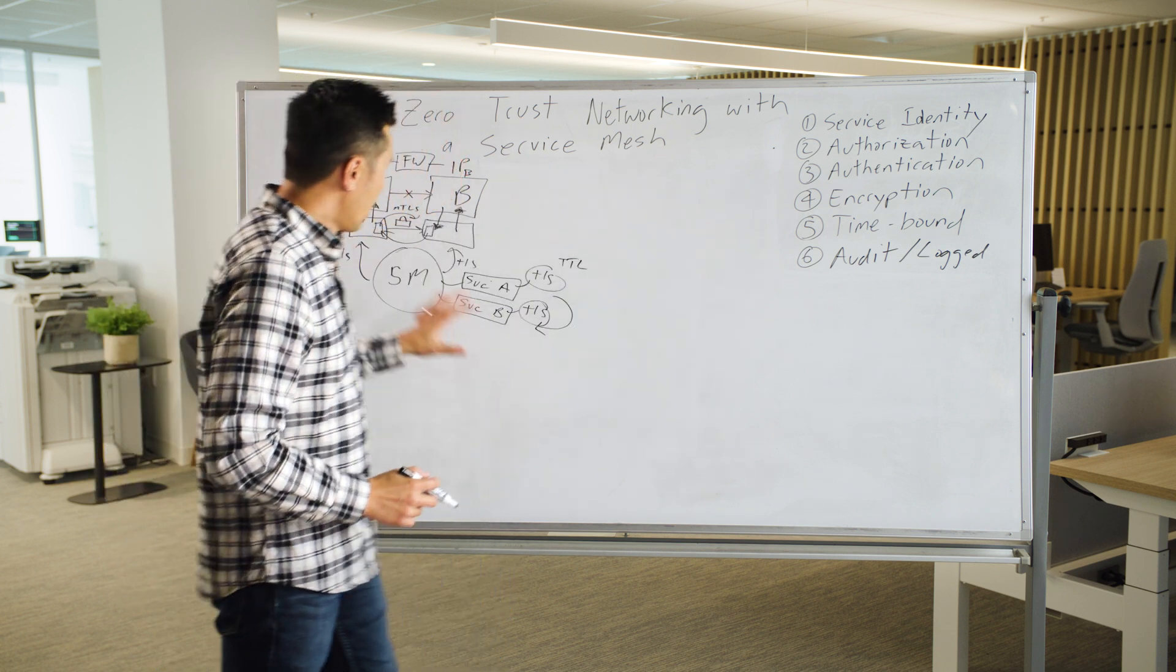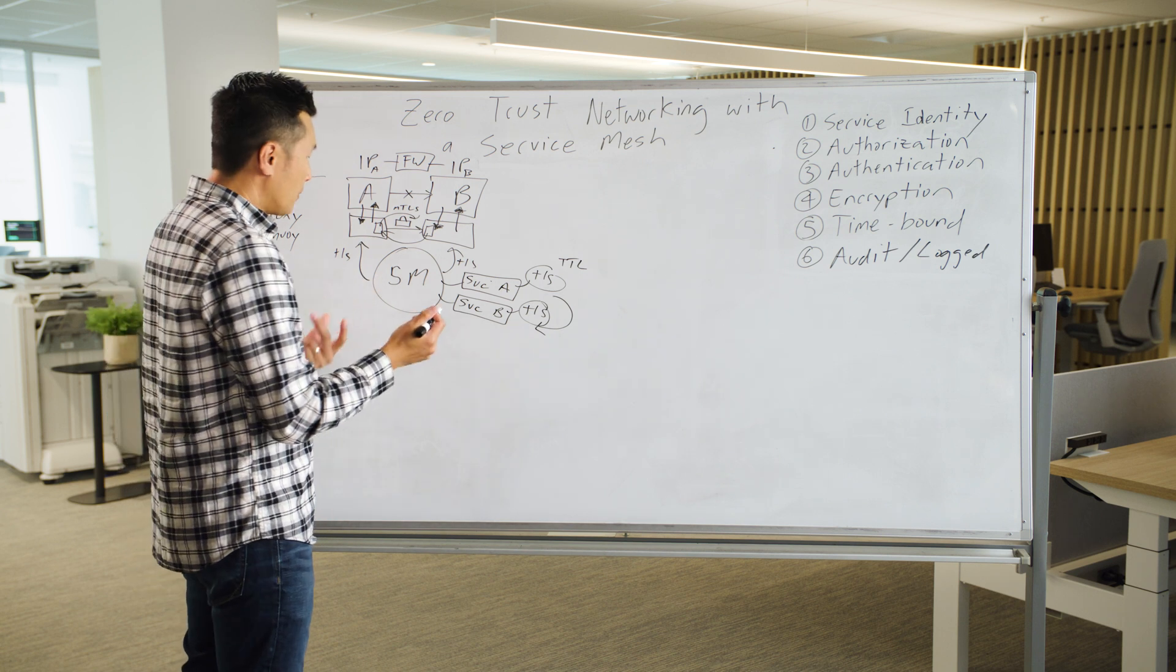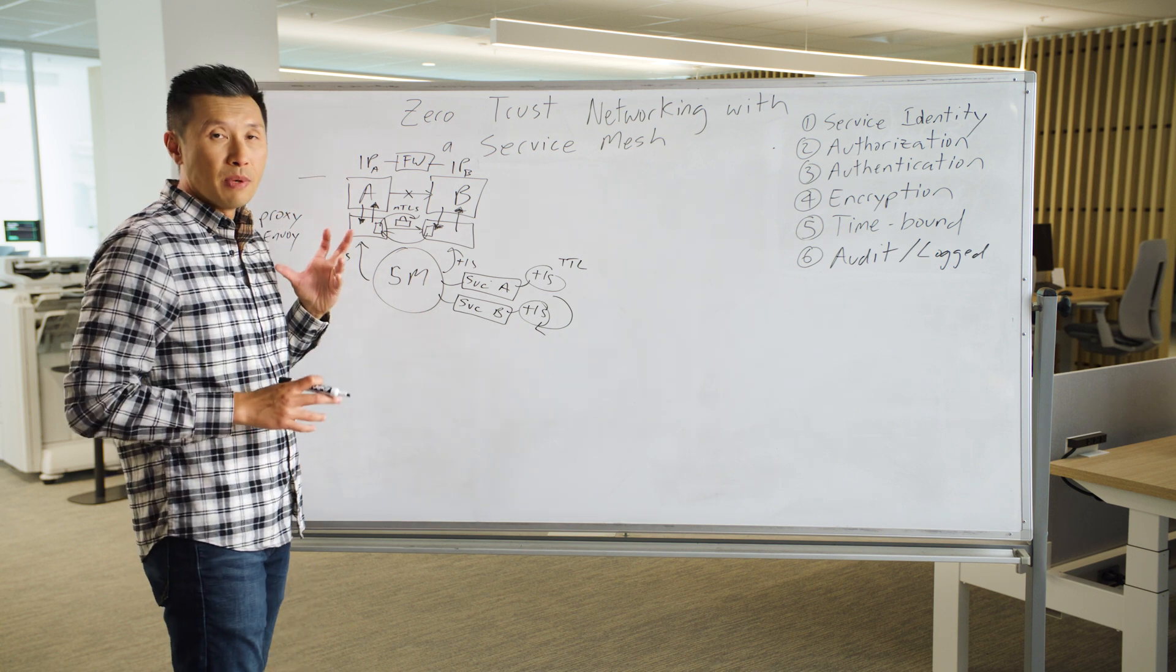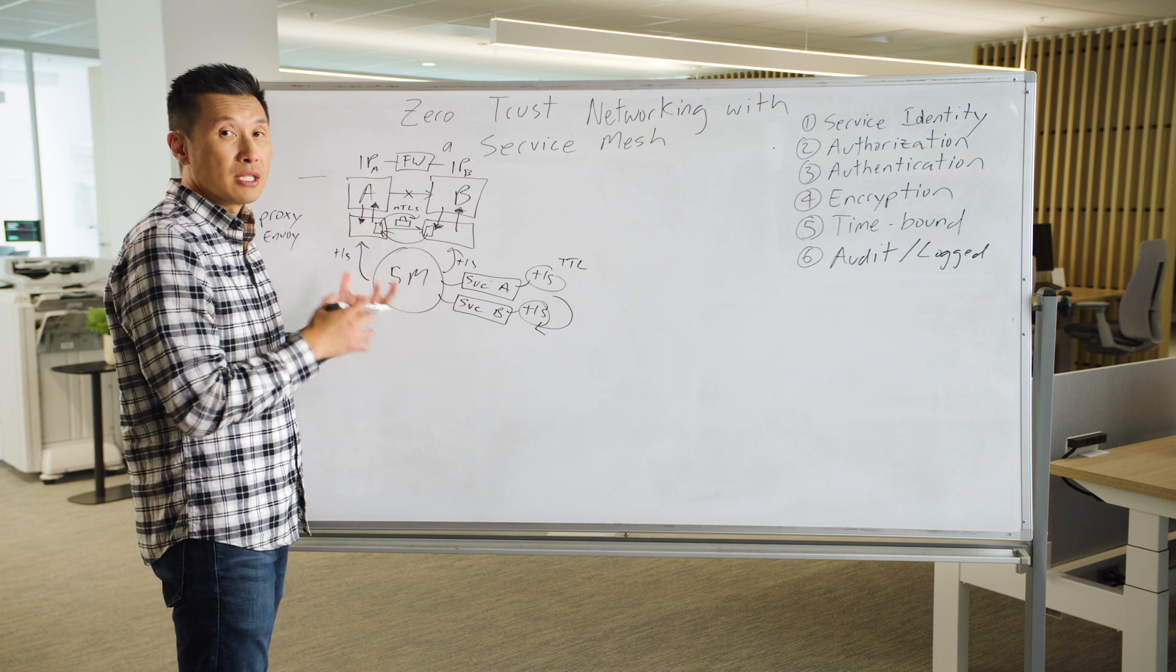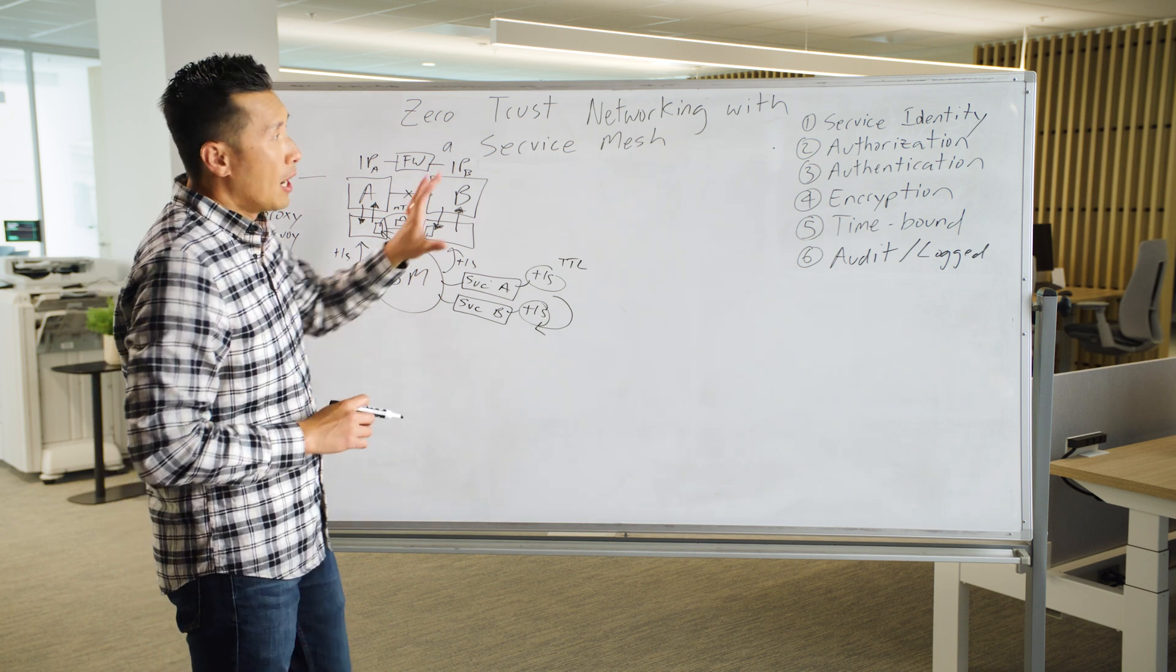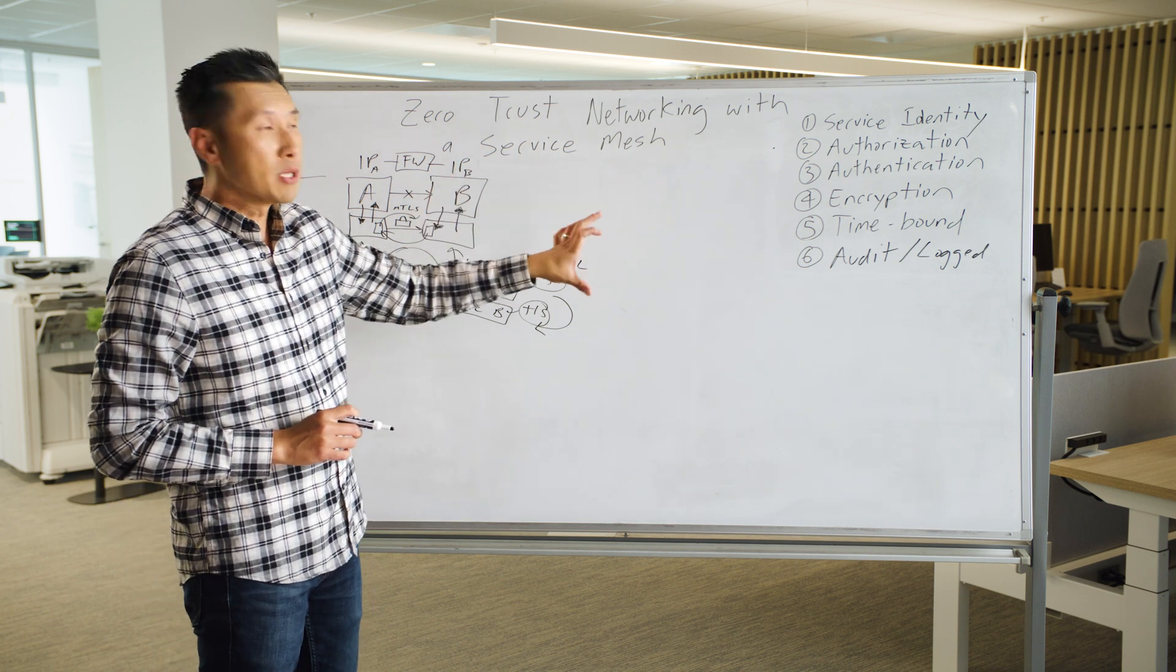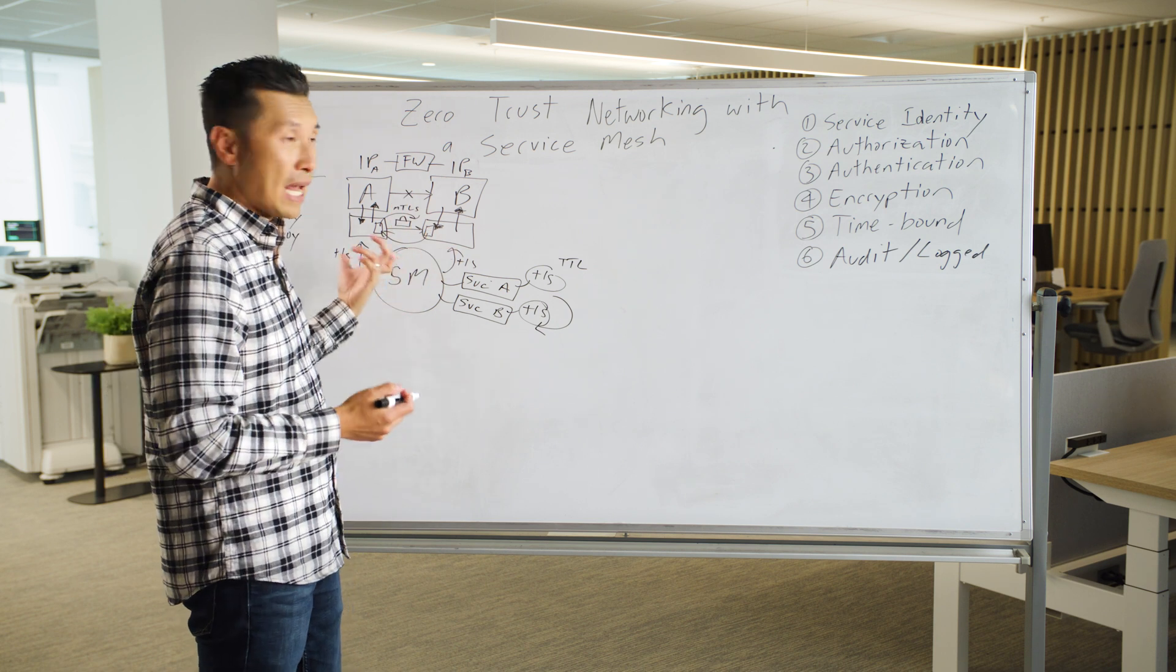Lastly, everything within the service mesh should always be logged and audited. You don't want to have any type of unauthorized access. If you do, you can always go back and look at the logs and see what has occurred in terms of access into your service mesh. Those are the six principles that really get you to achieve zero trust networking using a service mesh.